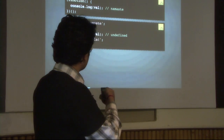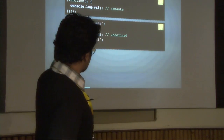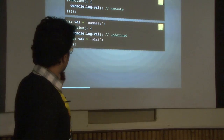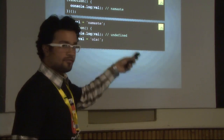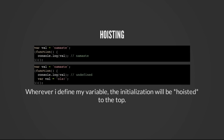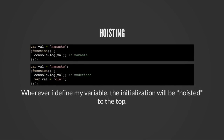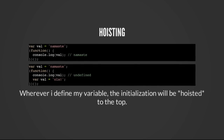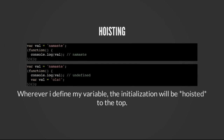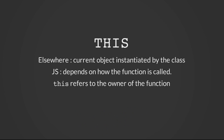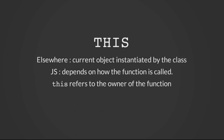In this case, JavaScript automatically adds a line of code as `var varName = undefined`, and then the third line ends up being `var = ola`. Wherever I define my variable, the initialization will be hoisted to the top. This is very confusing in JavaScript — very, very confusing.